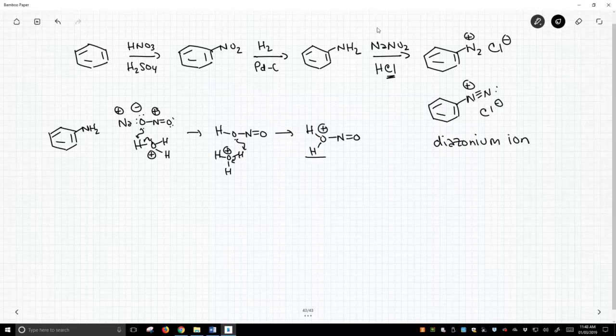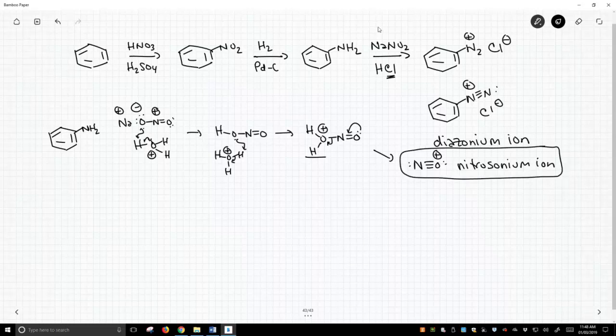Now, this water is just a good leaving group. One of these oxygen lone pairs pushes that out. What we get, if you follow the arrows, is we get this positively charged species. This is called a nitrosonium ion. Make it distinct from the diazonium ion. And this is a really good electrophile.